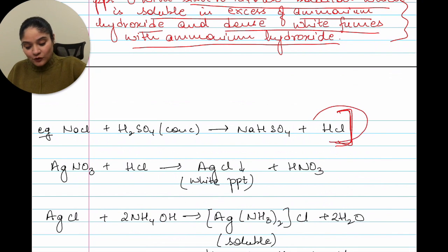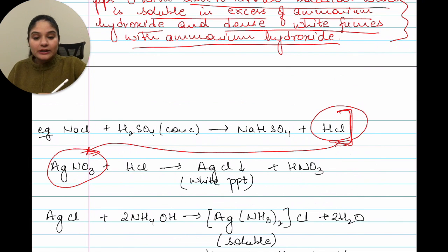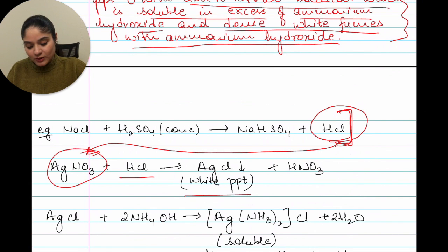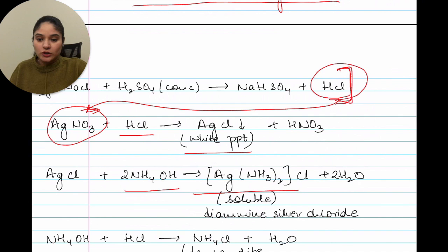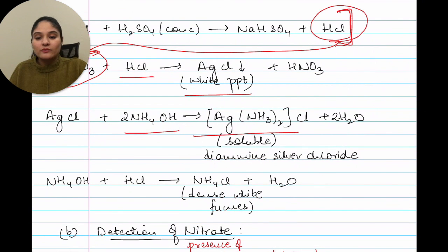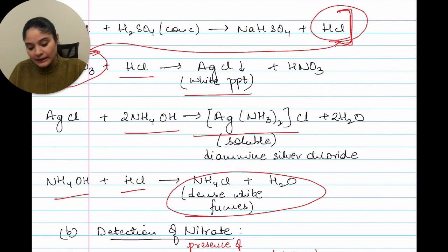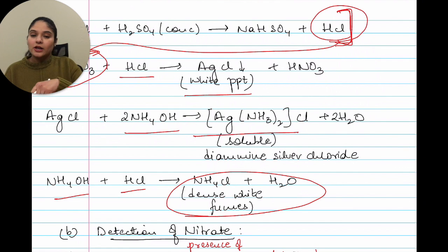Other characteristics of HCl: it gives a white precipitate with silver nitrate solution which is soluble in excess ammonium hydroxide, and gives dense white fumes with ammonium hydroxide. This test was also discussed in the HCl chapter. The example: NaCl plus H₂SO₄ gives NaHSO₄ plus HCl. The test with silver nitrate gives AgCl (white precipitate). AgCl reacting with NH₄OH gives diamine silver chloride, soluble in excess ammonium hydroxide. A glass rod dipped in ammonium hydroxide brought near HCl gas gives dense white fumes.